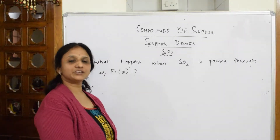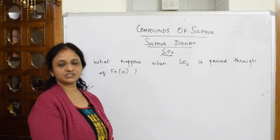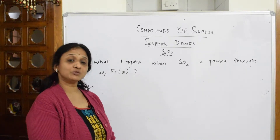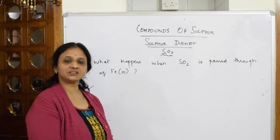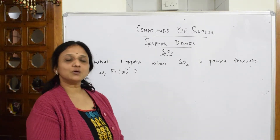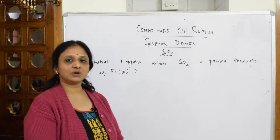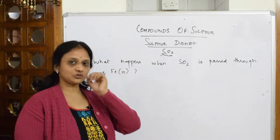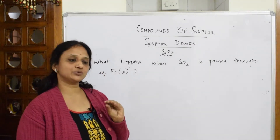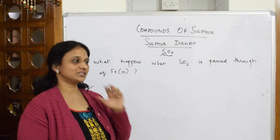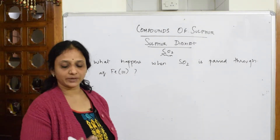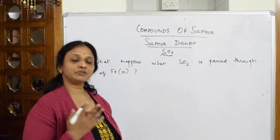We have seen one question on the preparation of sulfur dioxide. Now let's do one more question on the chemical property of sulfur dioxide. You should always remember one important concept: sulfur dioxide exists as both a reducing agent as well as an oxidizing agent.